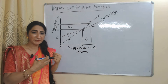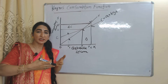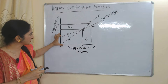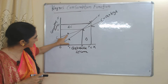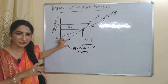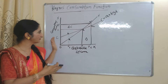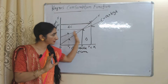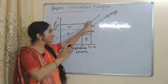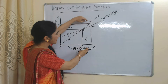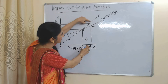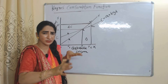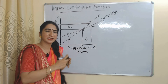Initially when someone gets a job and receives money, consumption will be more than income because they will fulfill all their desires — buying mobile, laptop, car, and home. You can see consumption KY1 is more than income RY1. But after a certain time period, as income continues to increase, consumption and income become equal. Eventually, consumption becomes less than income — consumption is R2Y2 but income is K2Y2 — because needs are satisfied and the person is consuming less and saving more.